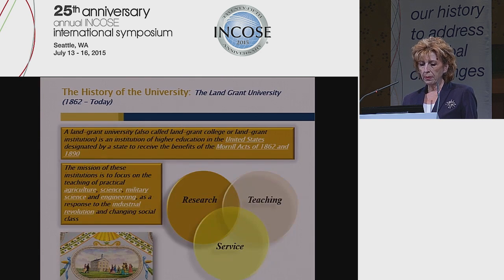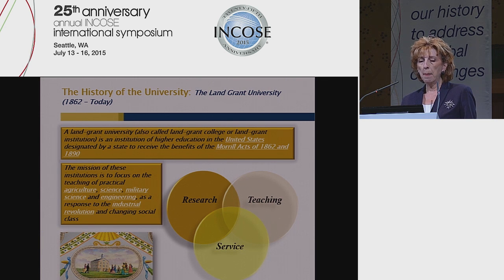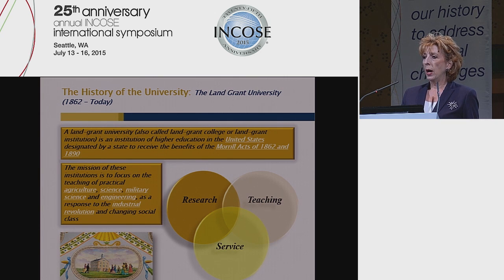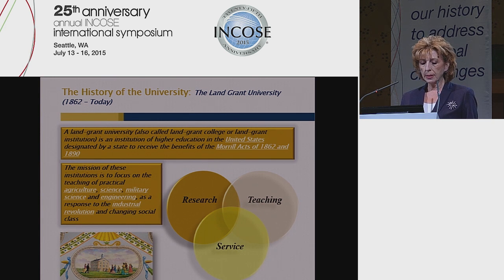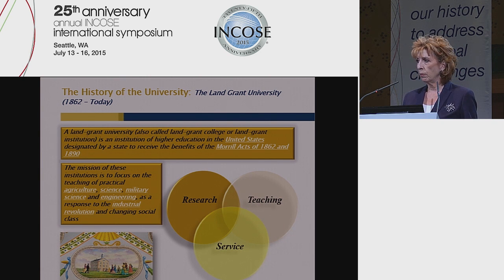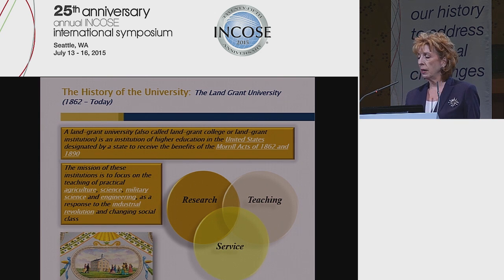About 1862, we had a breakthrough here in the US: the creation of the land-grant university, a true American model. The mission of teaching and research was recognized, and universities were given a new mission — to teach the arts of work and contribute to economic development. The core disciplines were agriculture, science, military science, and engineering. We have about 260 land-grant universities in the US, and these institutions now have a tripartite mission of research, teaching, and service.